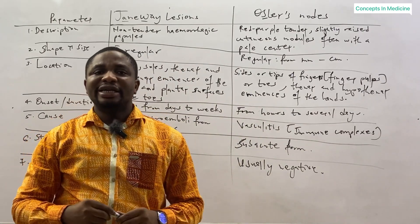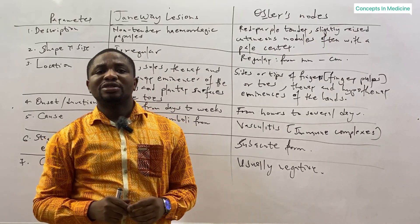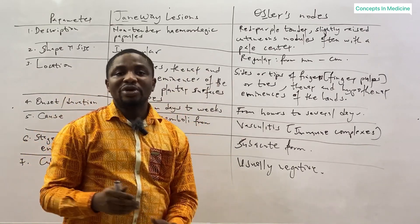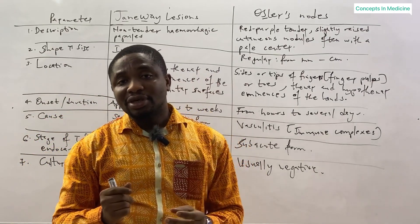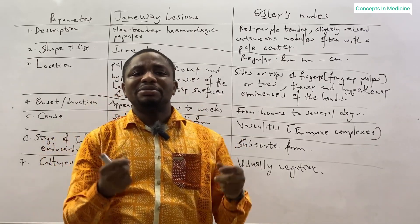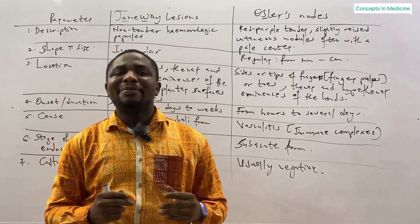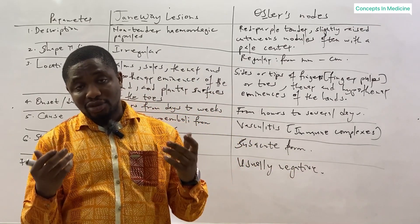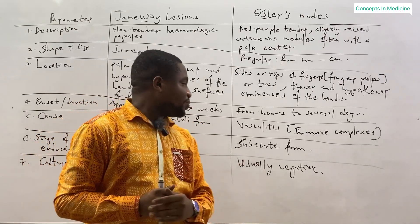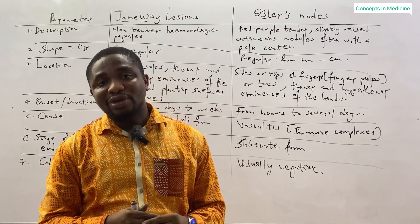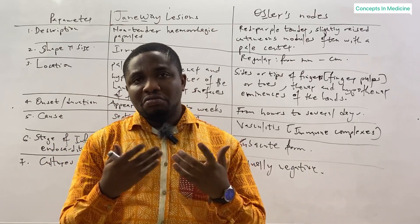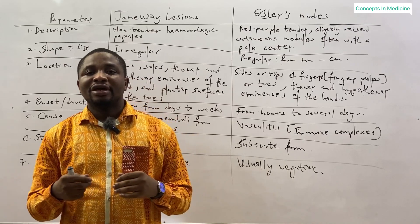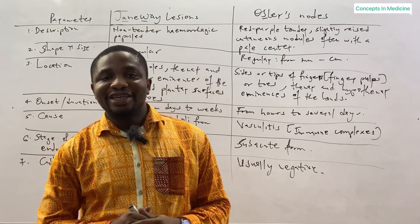If you look at 'Osler', the second letter is 'S', meaning in infective endocarditis you will elicit Osler's nodes in the sub-acute form of bacterial endocarditis. Their location — you'll find them at the sides or tips of the fingers, which we call the finger pads, or the sides or tips of the toes, and also the thenar and hypothenar eminences of the hand. They appear from hours to several days. The cause is mostly from vasculitis — inflammation of the blood vessels — emanating from the deposition of immune complexes or inflammatory processes. Finally, the cultures of Osler's nodes are usually negative.